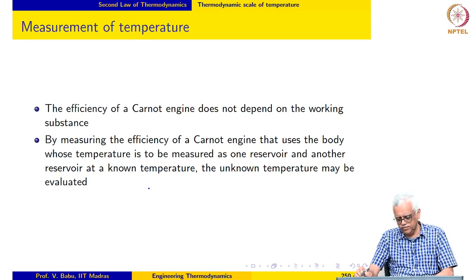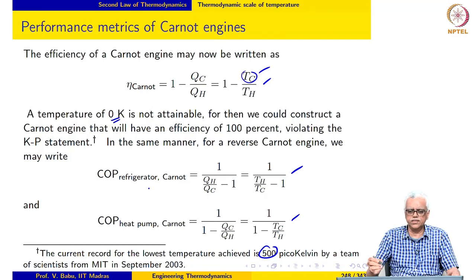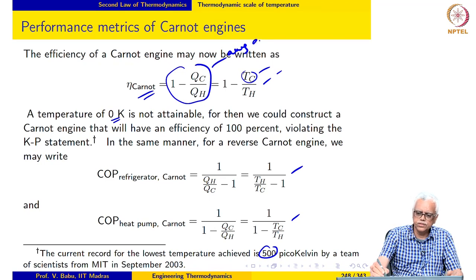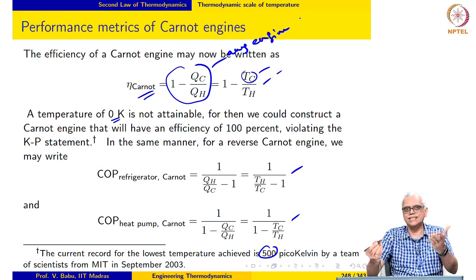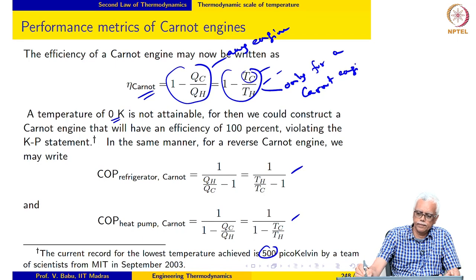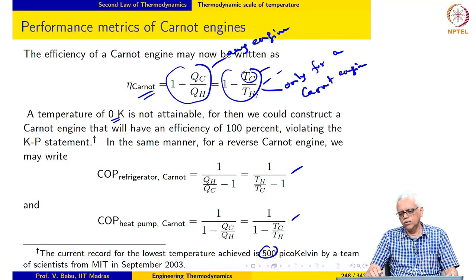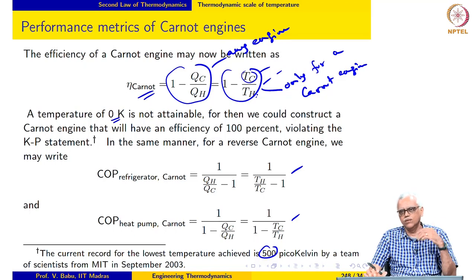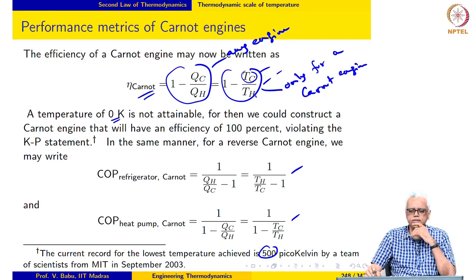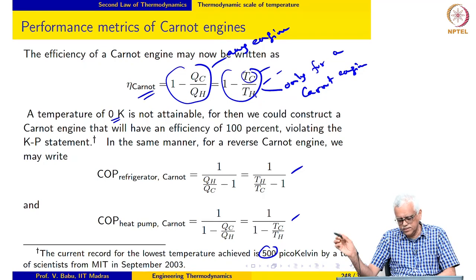There are interesting aspects of the Carnot engine even as a theoretical construct. The efficiency expression 1 minus QC/QH holds for any engine operating in a cycle, while the expression 1 minus TC/TH holds specifically for the Carnot engine. Notice that it depends only on the reservoir temperatures and not on the nature of the working substance — the working substance inside can be any pure substance.